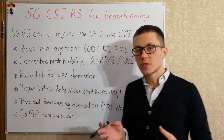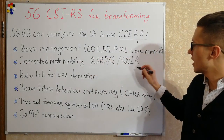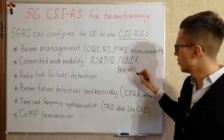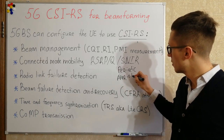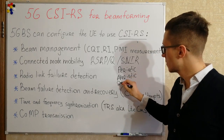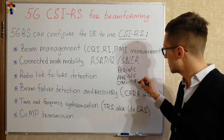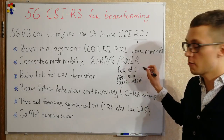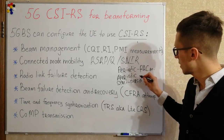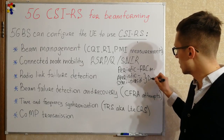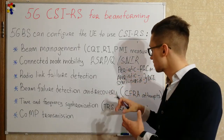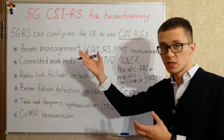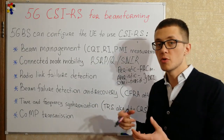It's important to say that such measurements can be periodic, aperiodic, or semi-persistent. Periodic measurements are based on RRC messages. Aperiodic and semi-persistent measurements are based on DCI commands, and such measurements can be transmitted by user equipment to the base station via PUCCH or PUSCH channels.